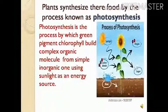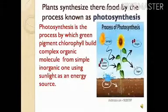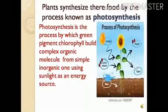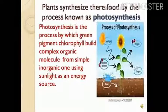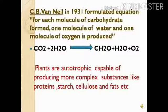Scientists have been trying to formulate a simple equation for photosynthesis over the past 200 years. C.B. Van Neel carried out different processes to find out the process of photosynthesis and formulated an equation. Photosynthesis is a process in which simple inorganic compounds are converted into organic compounds. During this process there is a release of oxygen gas. C.B. Van Neel formulated his equation in 1931.